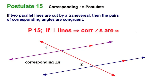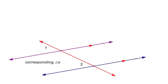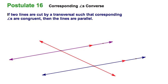I may also write it this way in my proofs — a little bit of shorthand. Now we're going to change this drawing around. Instead of starting with the lines being parallel, I'm going to start with a pair of congruent corresponding angles.